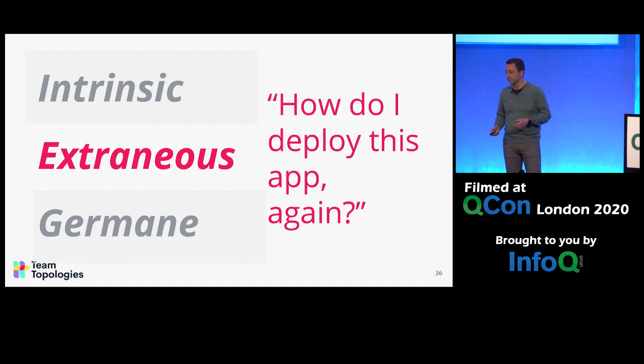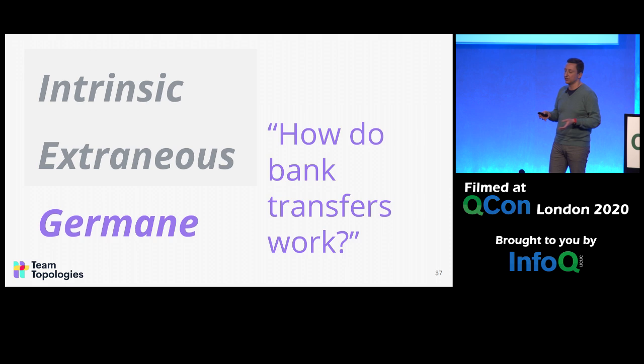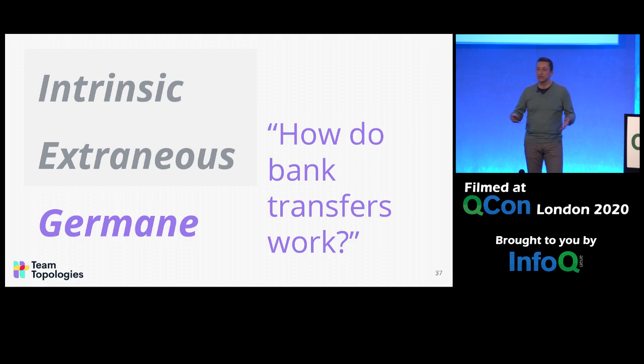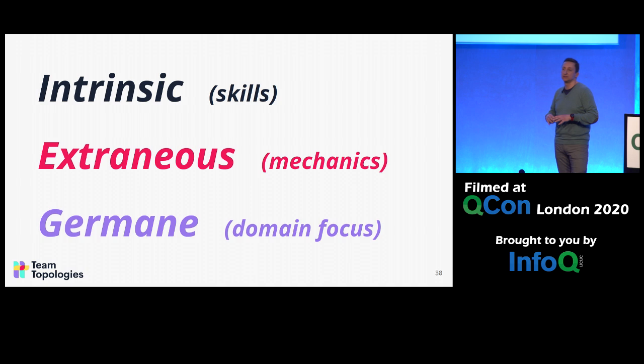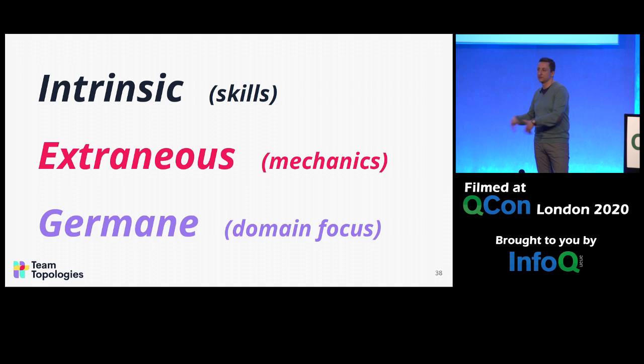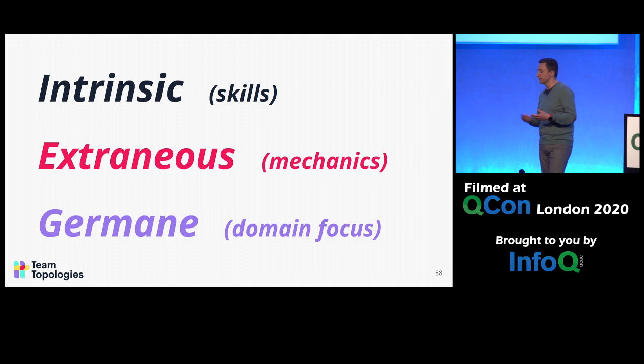Extraneous cognitive load has to do with any tasks needed to actually deliver work to customers or to production — things like how do I deploy this application, how do I access this test environment, how do I clean up test data. These are things not directly related to the problem I'm trying to solve but that I need to get done. Germane cognitive load is everything around the actual business domain — for example, if I'm working in private banking, I need to know how bank transfers work.